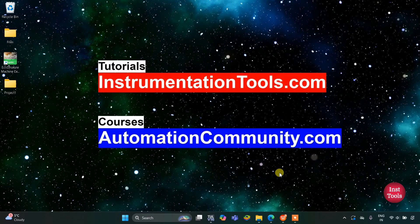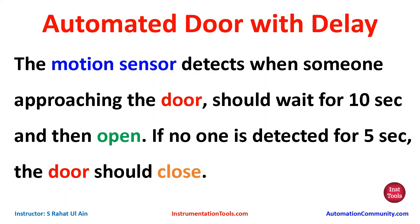Hello everyone, welcome to Automation Community. Today in this video we are going to discuss an example about an automated door with delay. The motion sensor detects when someone is approaching — the door should wait for 10 seconds and then open. If no one is detected for 5 seconds, the door should close.